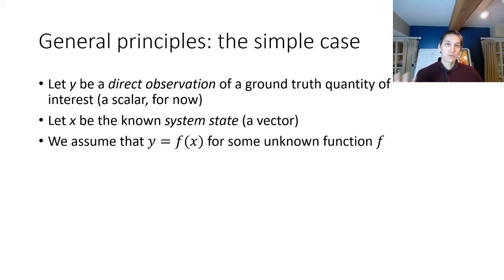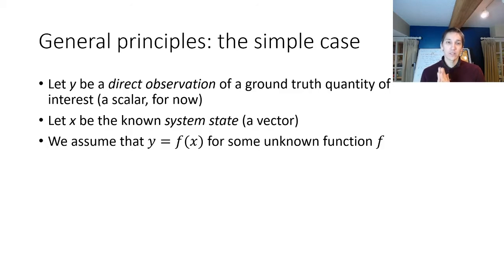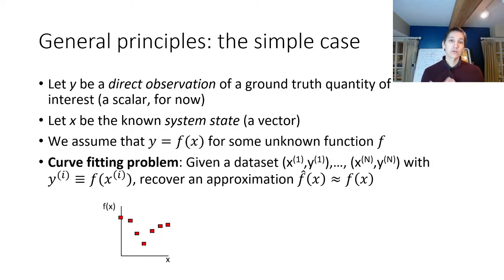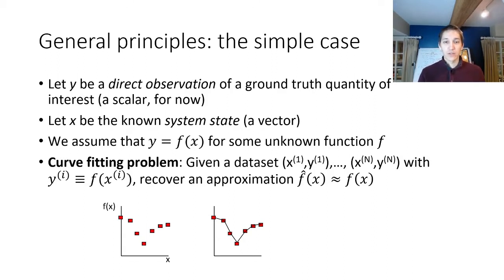In the simple case, whenever we want to calibrate anything, suppose we want to directly observe some quantity of interest and we get an observation y. If x is the known system state of the robot, we're trying to predict y = f(x), where we don't know the function f. This is very similar to curve fitting. What we're going to do with calibration is generate a calibration dataset of n different paired observations of inputs x and outputs y, and then recover an approximation f-hat to the true underlying function. For any novel x, we can then interpolate and extrapolate to give a new prediction.